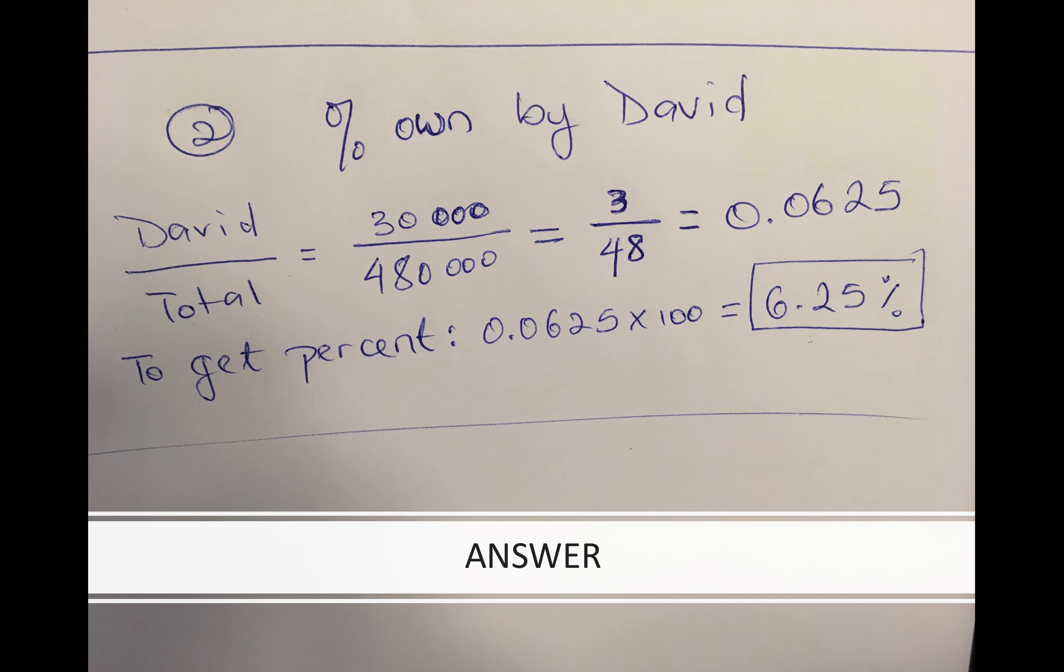This is how I solve it. We're looking for the percent that David owns. I wrote David over the total. So David is $30,000 - that's how much he put in, that's the money he put in, that's his capital, that's the money he invested in his business. He has a partnership.